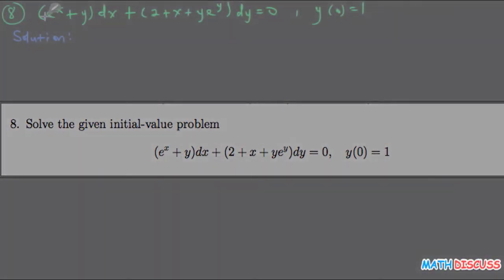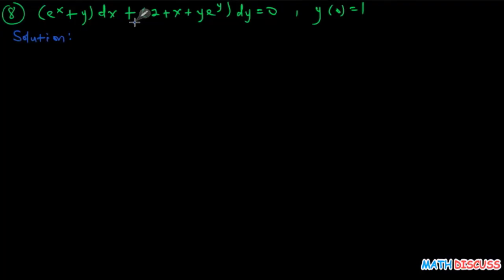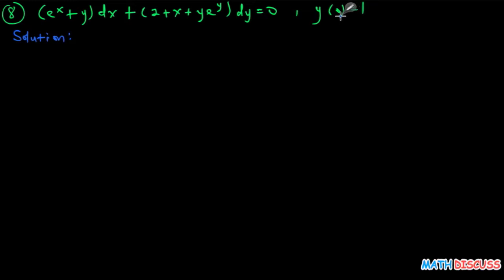You're given a differential equation — this is question 8 — with an initial condition. So this is actually an initial value problem. You're told to solve this. You should expect to obtain a particular solution, not a general solution. How then do you go about solving this?